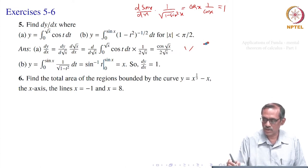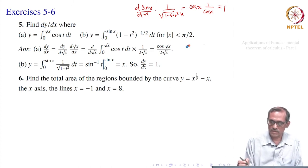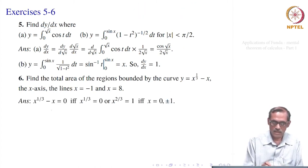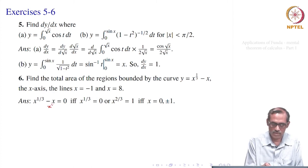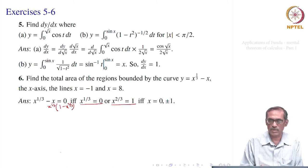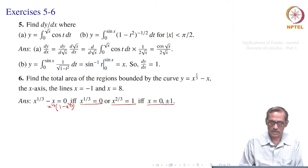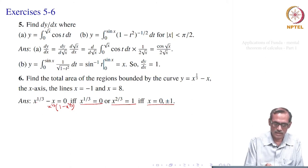So, let us find first where does it cross. x to the power 1 by 3 minus x must be equal to 0. When you take this curve, it crosses the x-axis meaning y equals this function must be 0. That is 0 for x to the power 1 by 3 equal to 0, or x to the power 2 by 3 equal to 1 — if you consider x to the power 1 by 3 times (1 minus x to the power 2 by 3) in this form. So, either x to the power 1 by 3 is 0 or x to the power 2 by 3 equals 1. That gives you three points: minus 1, 0, and 1. If you take minus 1 here, that gives minus 1 to the power 1 by 3 which is minus 1, so minus 1 plus 1 equals 0 — that also happens.